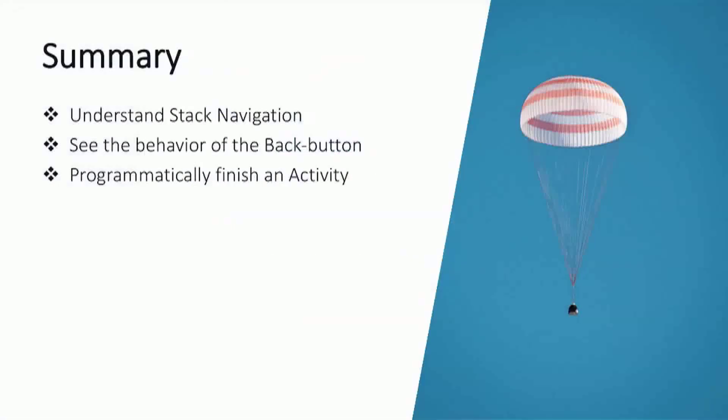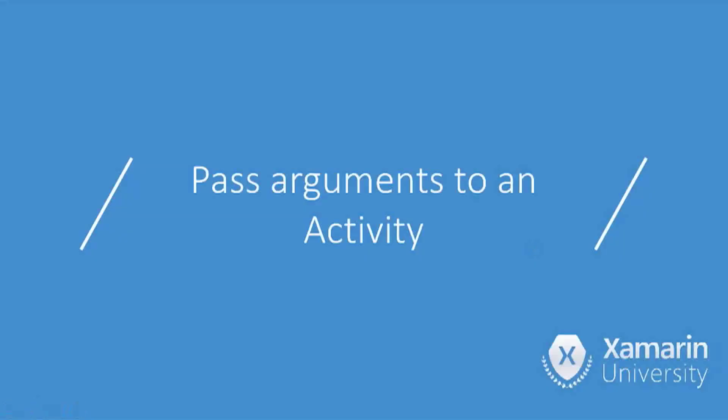In this section we spent most of our time on navigation concepts — in particular stack navigation and the back button. Most of the time automatic navigation is sufficient: with stack navigation you just start activities and the user uses the Android back button to go back. But there are cases where that's not sufficient, like the Cancel button we coded and the Save button we'll implement later. Next we're going to talk about passing arguments to an activity.